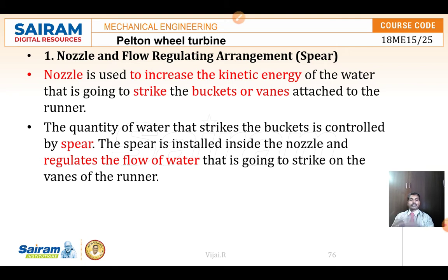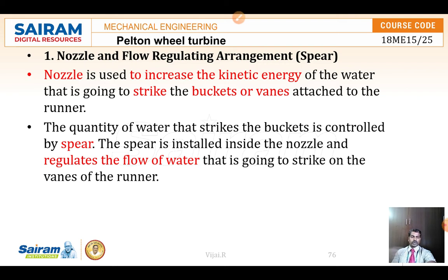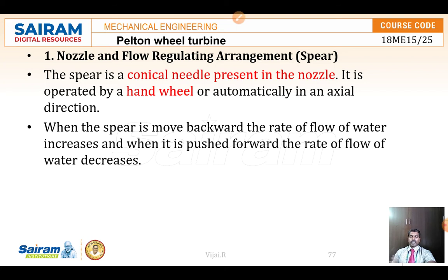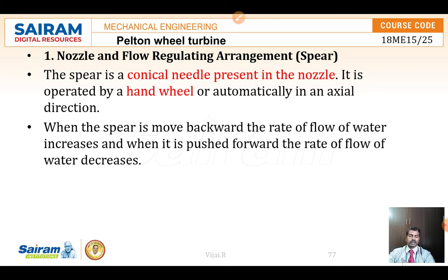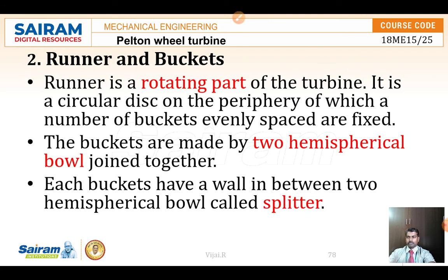The nozzle is used to increase the kinetic energy of the water so that it strikes on the buckets, converting kinetic energy of water into rotary energy of the motor shaft. The conical needle present in the nozzle can be operated by a hand wheel. When the hand wheel is rotated, the sphere moves forward and backward, controlling the flow of water — increasing or decreasing it to push water towards the blades.